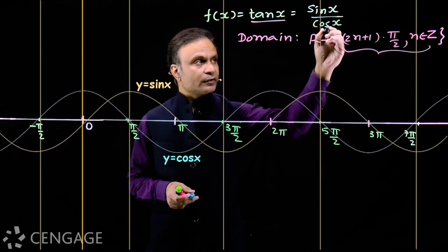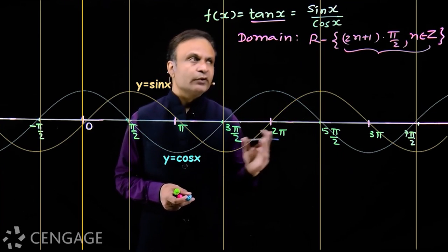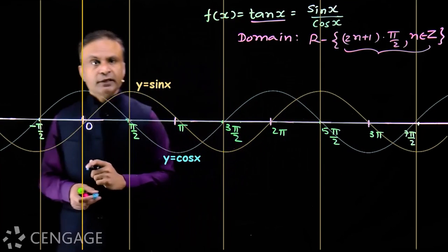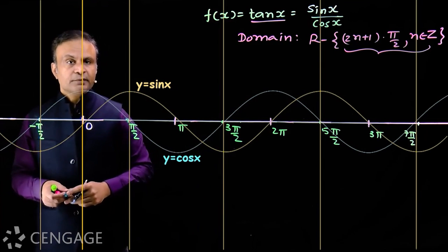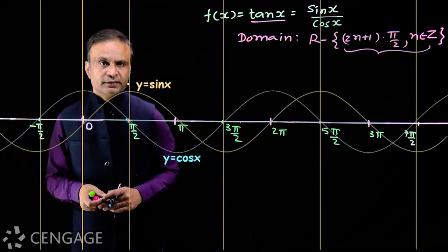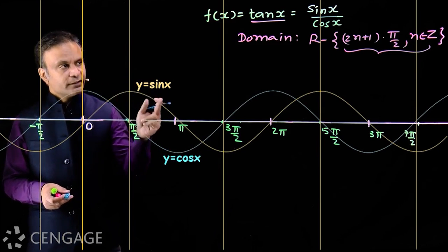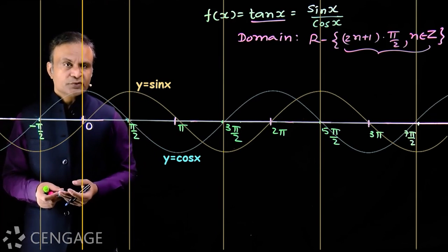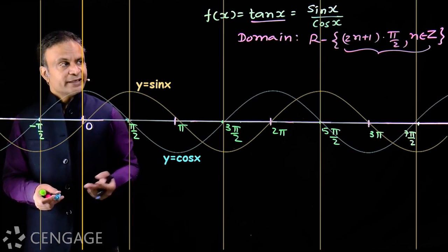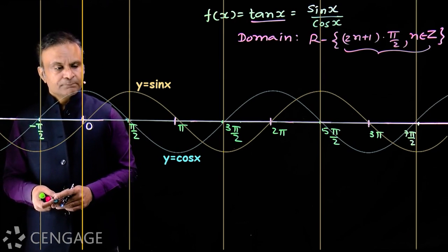As x increases, the numerator (sin x) increases and the denominator (cos x) decreases — both remaining positive. So what will the trend of tan x be? The value of tan x increases. Both sin x and cos x are positive in the first quadrant, so tan x is also positive.